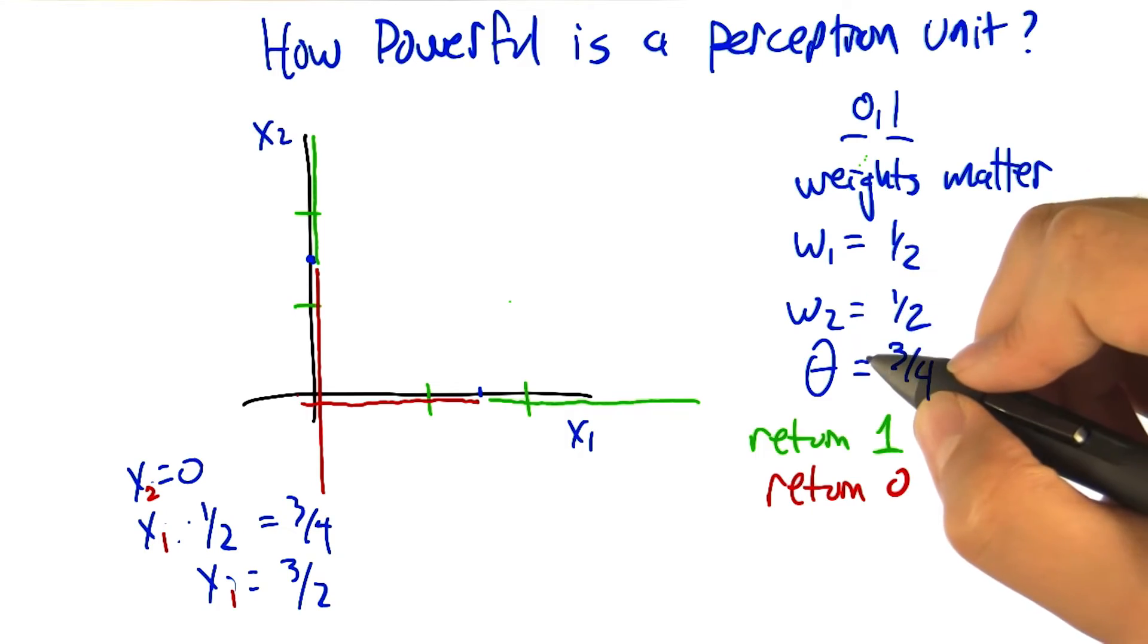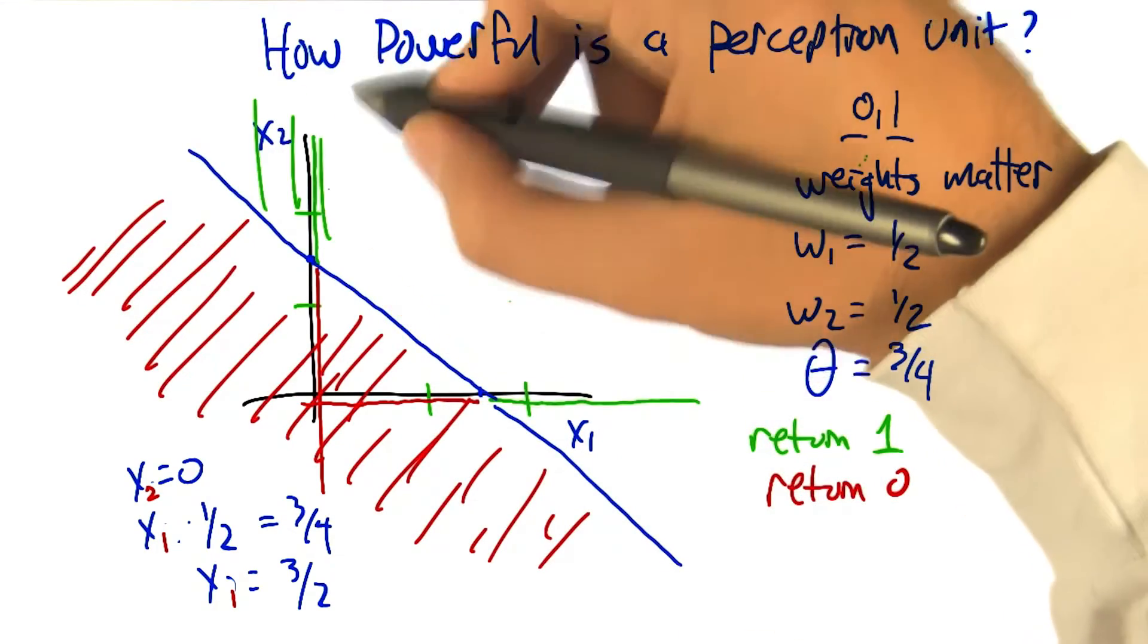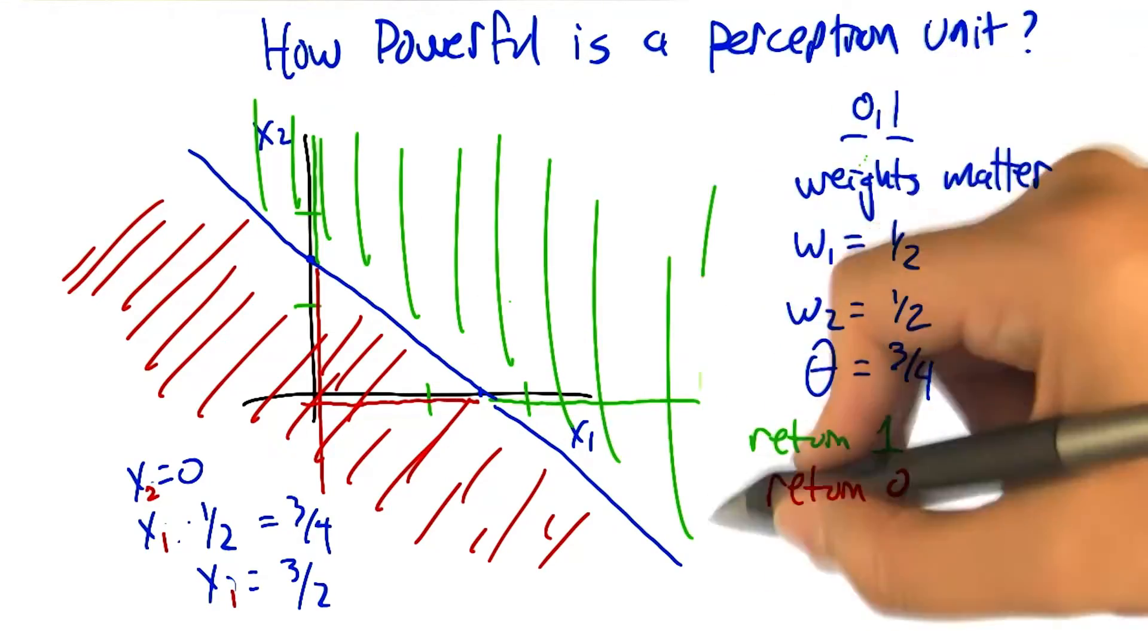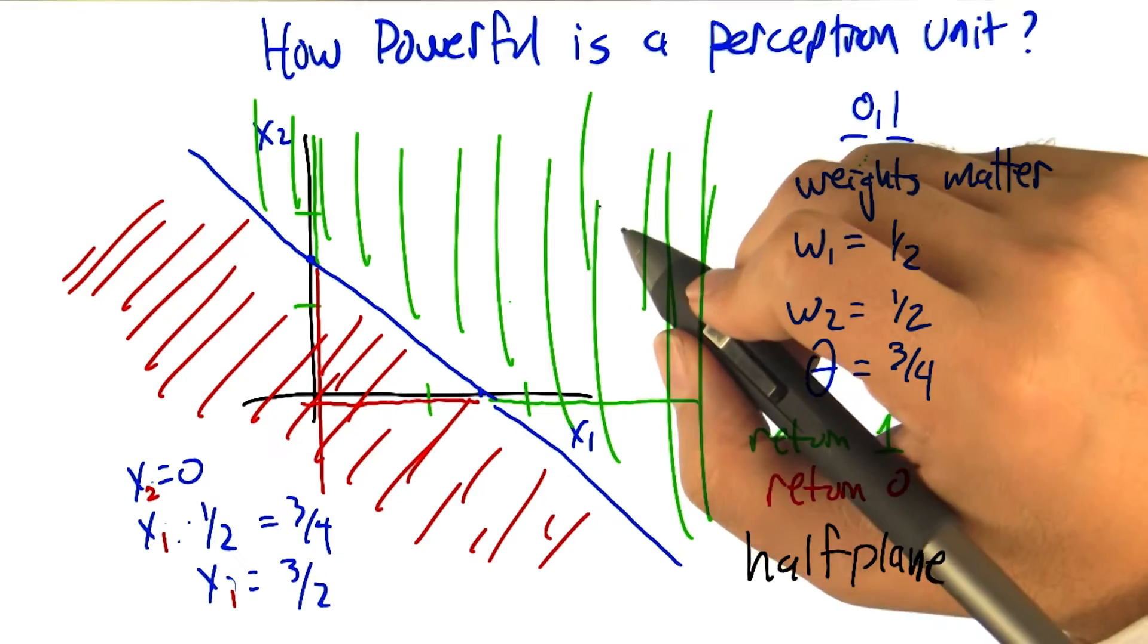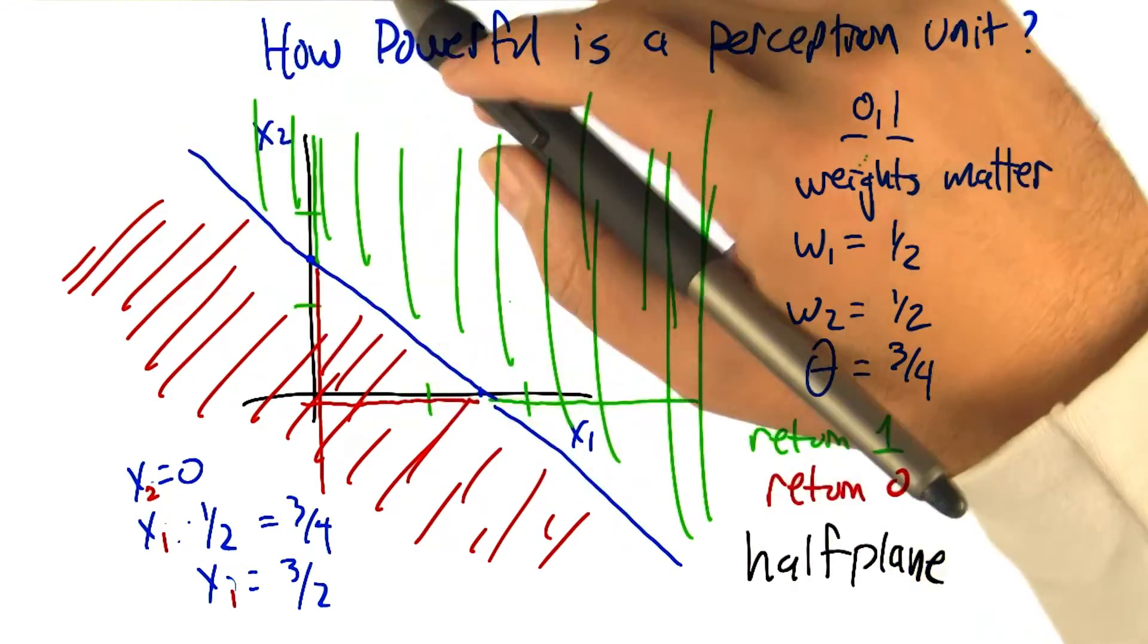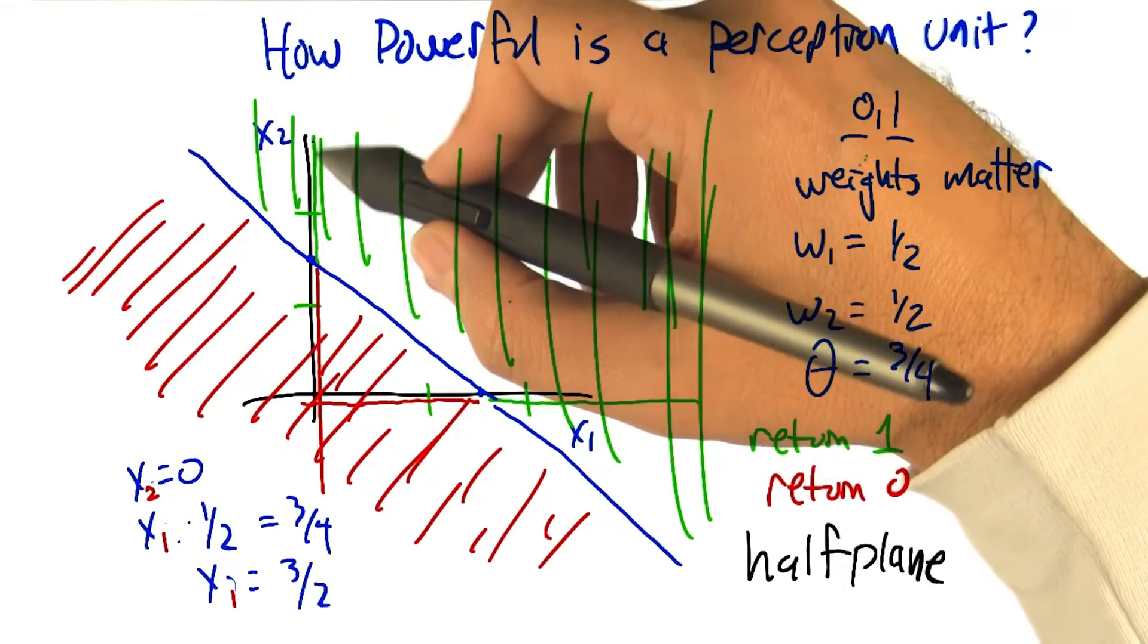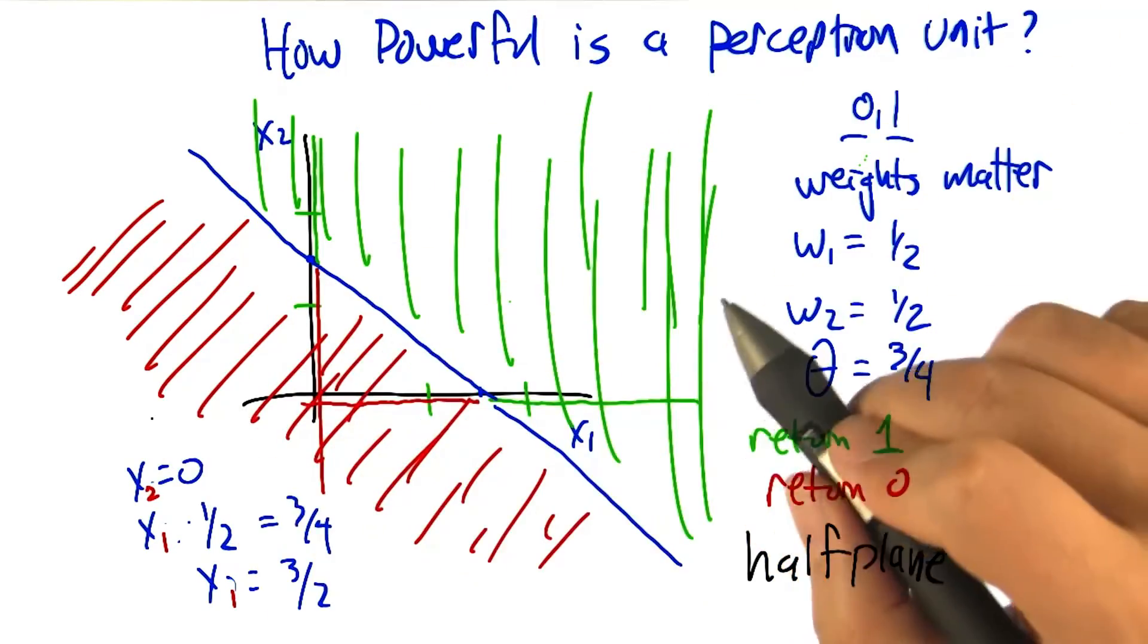But what we notice is that the relationships are all linear here. Solving this linear inequality gives us a picture like this. So this perceptron computes a kind of half plane. The plane that's above this line gives the one answers, and below that line is giving us the zero answers.